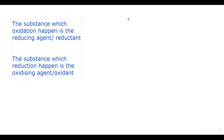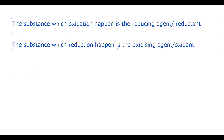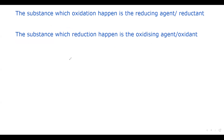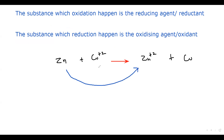Another example: zinc (Zn) reacts with copper ion (Cu²⁺) and turns into zinc ion (Zn²⁺) and copper atom (Cu). Identifying the changes: zinc is an element, so its oxidation number is zero, and it changes to +2.